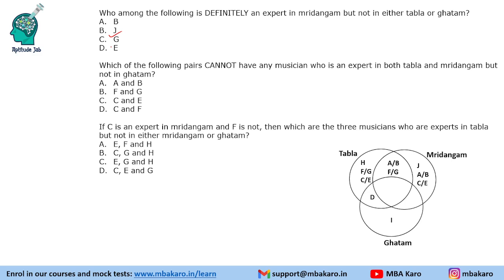Question 3: Which of the following pairs cannot have any musician who is expert in both tabla and mridangam but not in ghatam? So we need to identify who cannot come in the tabla-and-mridangam region. A, B, F, or G can come there — A and B can come there and F and G can come there. But C and E cannot come there, because C and E can only come in the only-tabla or only-mridangam regions. Now if C is expert in mridangam and F is not expert in mridangam, then F will not come in the tabla-and-mridangam region. So F will come in the only-tabla region.